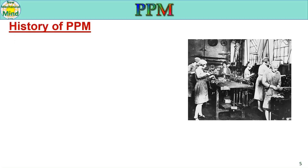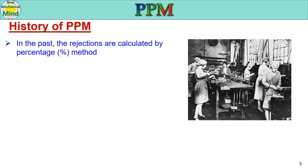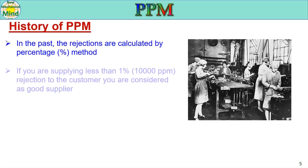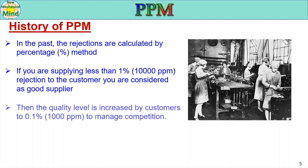Next, the history of PPM. In the past, rejections were calculated by percentage method. If you were supplying less than 1% rejection (that is, 10,000 PPM) to the customer, you were considered a good supplier, because at that time only the percentage method was used. Then the quality level requirement was increased by customers to 0.1%, which is 1,000 PPM, to manage competition. So the target was reduced from 1% to 0.1%.